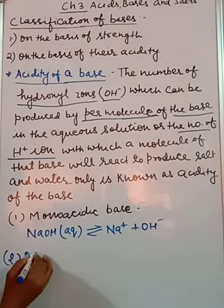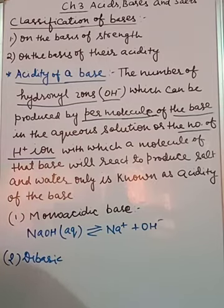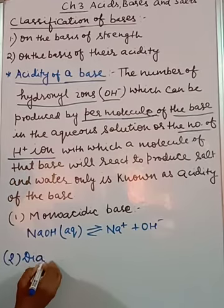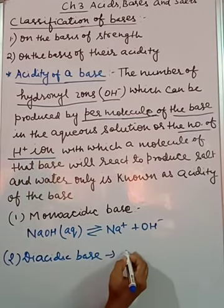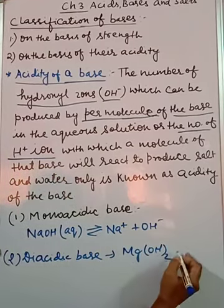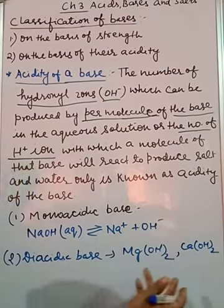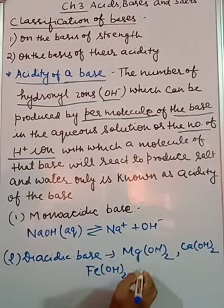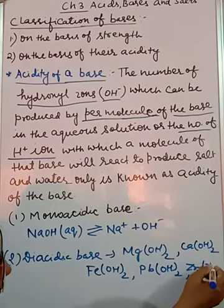Now second is diacidic. As it is clear from the name, diacidic means two. For example Mg(OH)2, Ca(OH)2, and more you can take here: Fe(OH)2, Pb(OH)2, Zn(OH)2. So all these you can observe, in all these cases number of hydroxyl ions is two.